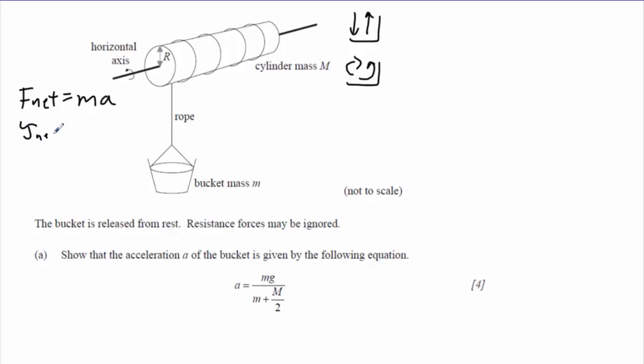And net torque equals I alpha for the rotational motion. So for the linear motion, free body diagram, we'd have mg downwards the weight and the tension in the string pulling upwards, so that our equation F net equals MA would become mg minus the tension equals mass times acceleration.